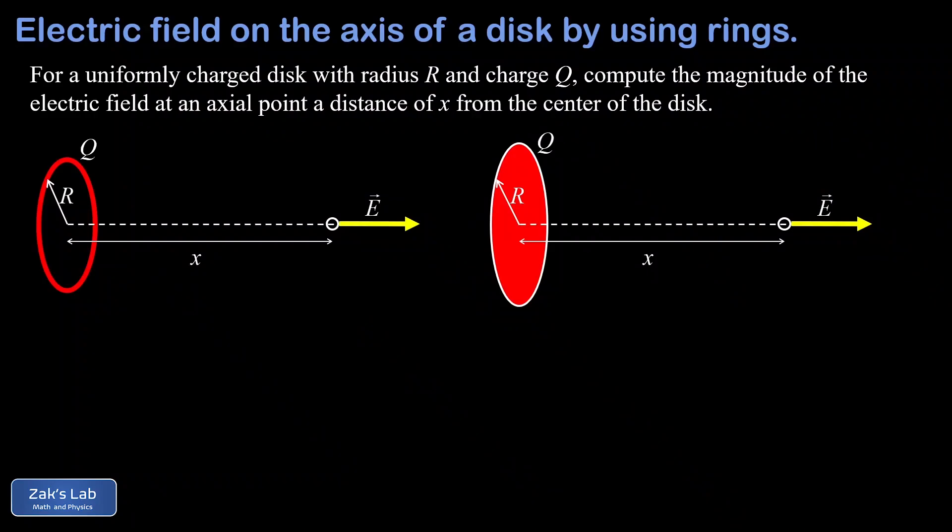In this video, we're going to start with our previous result for the electric field due to a ring of charge, and we're going to use this result to find the electric field on the axis of a uniformly charged disk. After finding the electric field for the disk, we're going to investigate a couple limiting cases. First, when we're very close to the disk, we should retrieve the formula for the electric field due to an infinite sheet of charge.